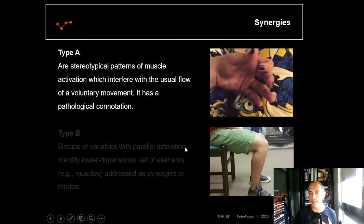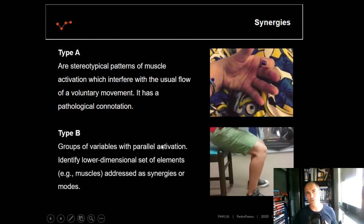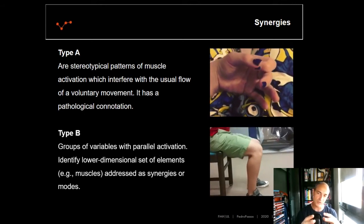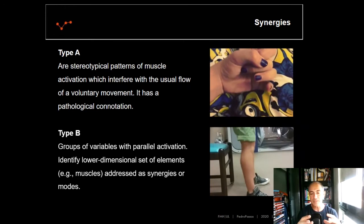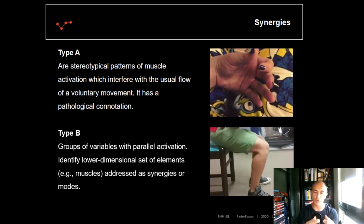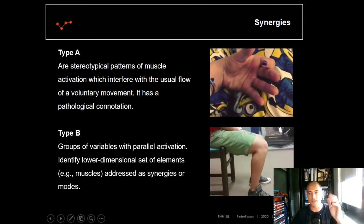Then you also have the Type B synergies, mostly used in research in kinesiology. Researchers try to find out how a set of elements, usually muscles, work together to perform some kind of movement, as this one in the video, like the sit-to-stand movement.